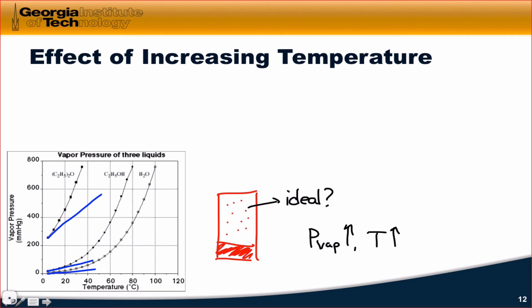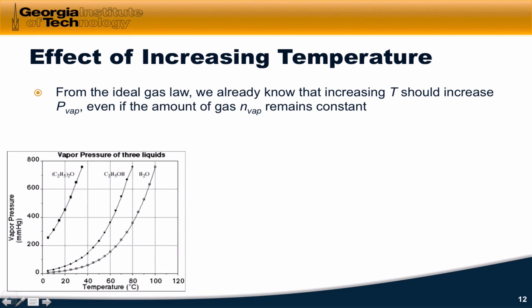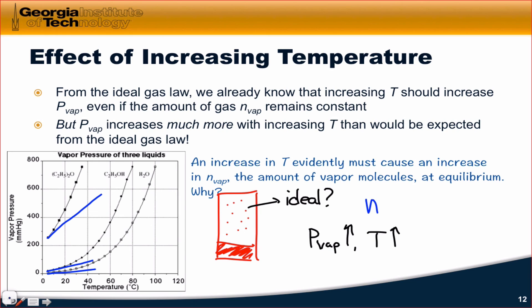Why is the increase more rapid than linear? It has something to do with the number of moles of gas. We assumed that the number of moles of vapor is constant, but with increasing temperature it's not necessarily the case that the number of moles of gas will be constant. An increase in temperature evidently must cause an increase in the number of moles of vapor molecules. We can answer this question by thinking about how free energy applies to vapor-liquid equilibrium, and we're going to do that in the next video.